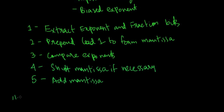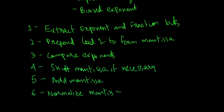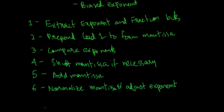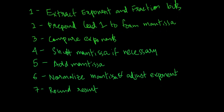The fifth step is to add the mantissas. In the binary case, after adding, the next step is to adjust the exponent — adjust the decimal point position and change the exponent value accordingly. Then the result is rounded if necessary.